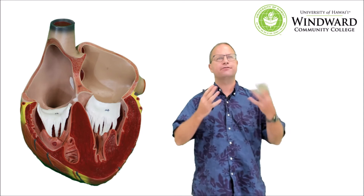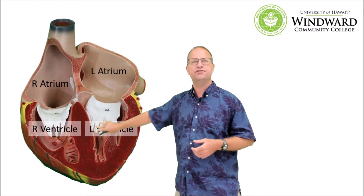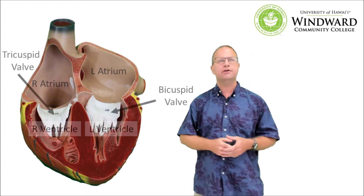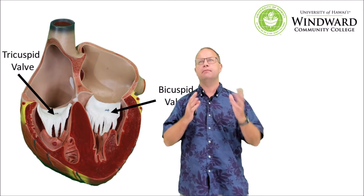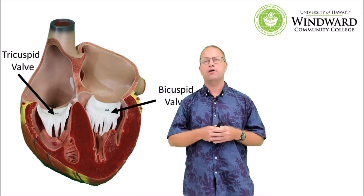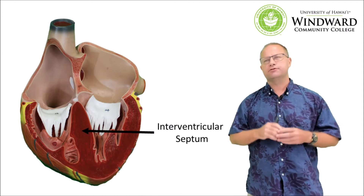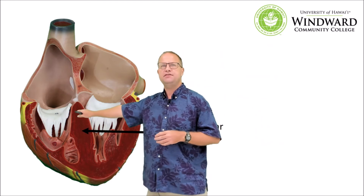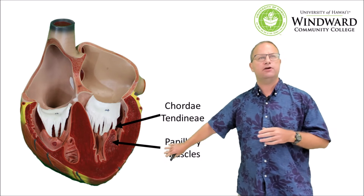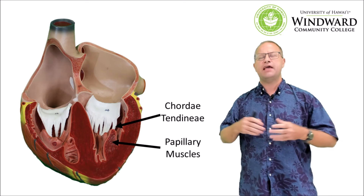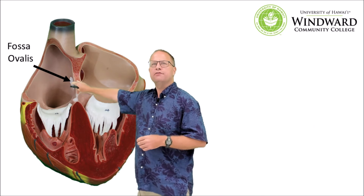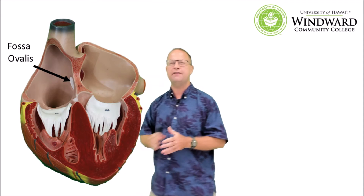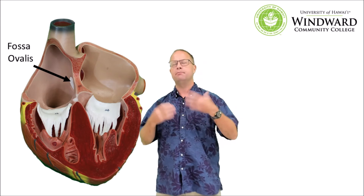This heart dissects in a frontal plane, so we can see the left and right atria and left and right ventricles — all four chambers. We can see the atrioventricular valves: the tricuspid on the right and the bicuspid on the left, also called the mitral valve. Another anatomical structure visible here is the interventricular septum — a wall of cardiac muscle dividing the left and right ventricles. We can also see the chordae tendineae and papillary muscles, which anchor the AV valves and prevent them from prolapsing. The fossa ovalis is also visible — the remnant of the fetal foramen ovale shunt.